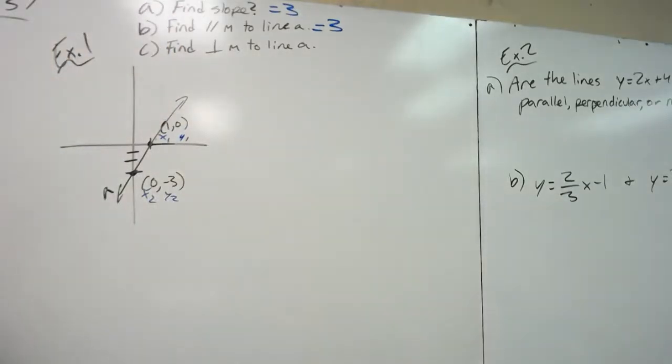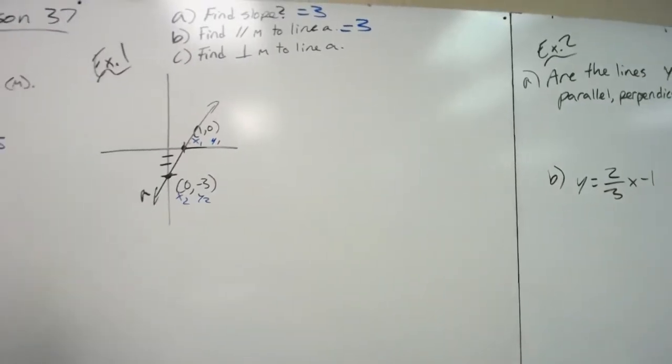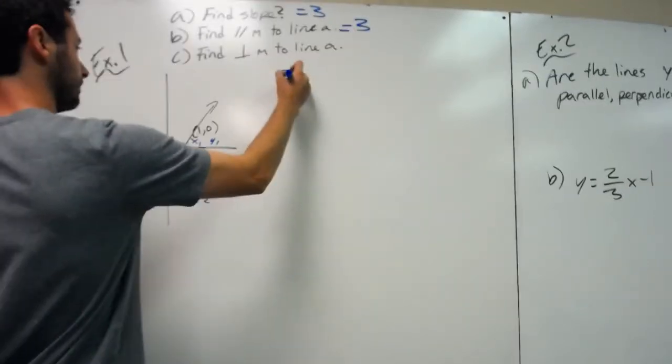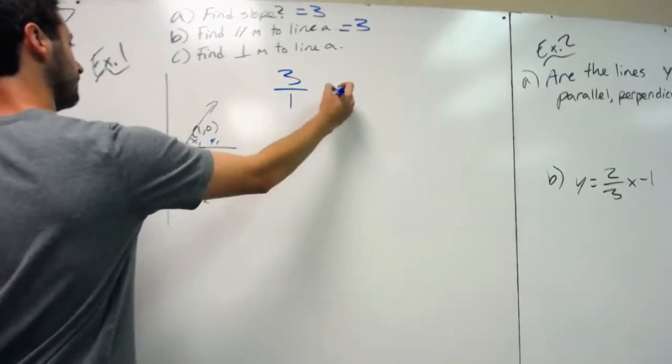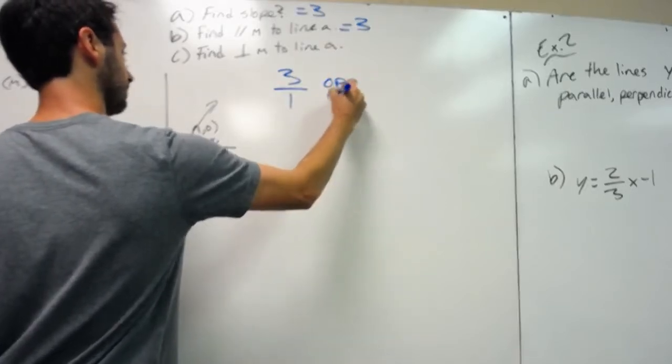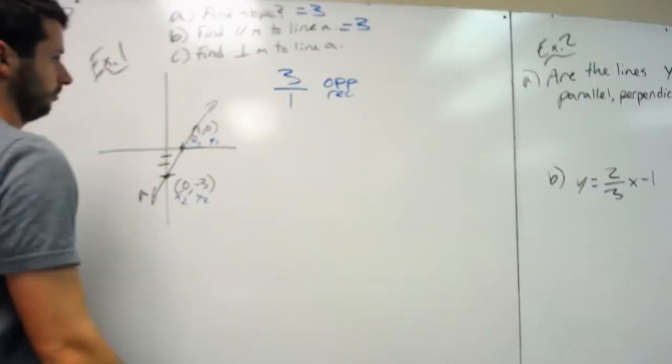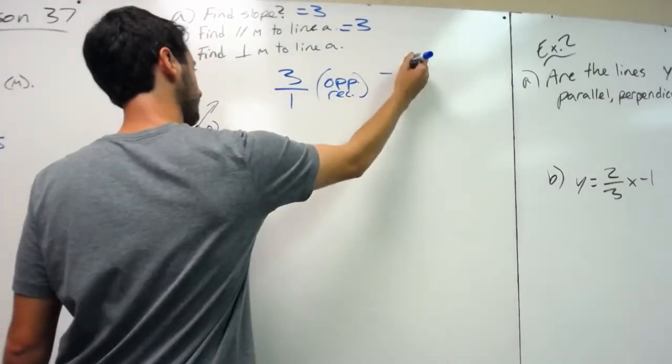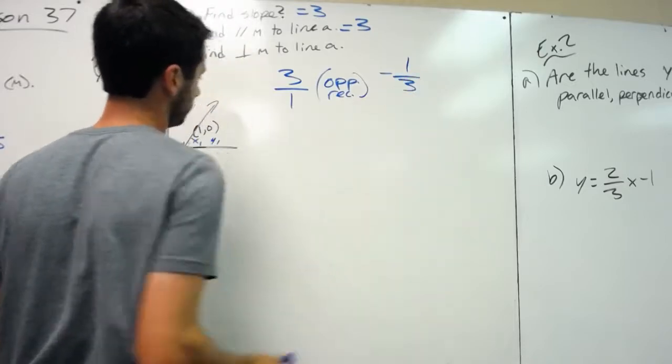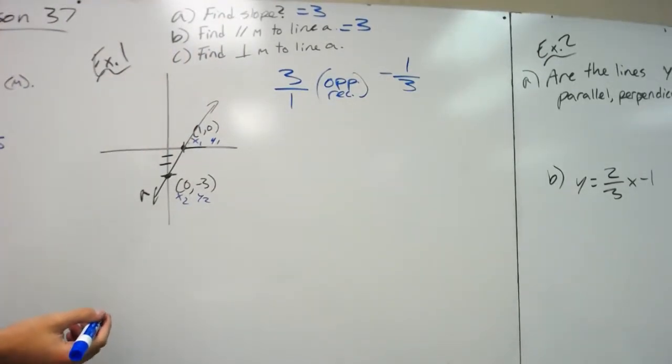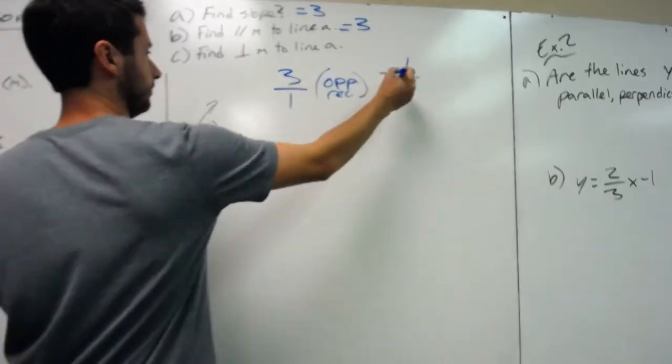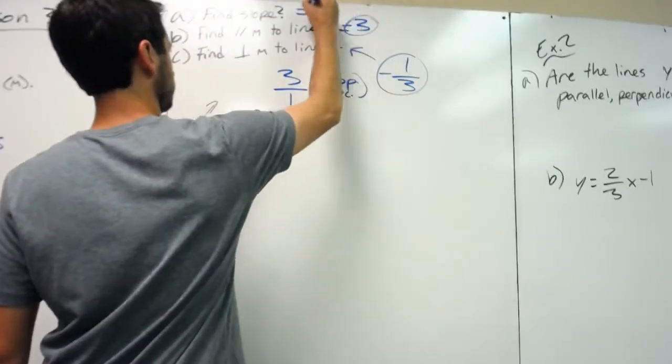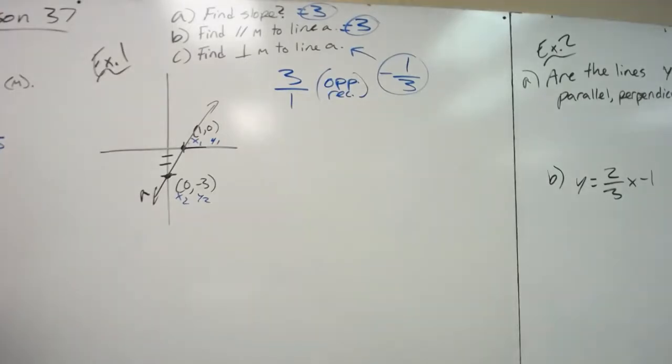Then find a perpendicular slope. Perpendicular is the opposite reciprocal. So opposite reciprocal of 3 over 1 would be negative, then flip numerator and denominator, 1 over 3. Negative 1 over 3 would be your answer. That gives you the basis of understanding you need.